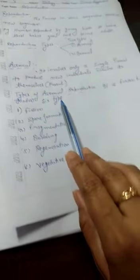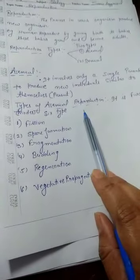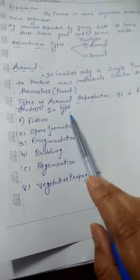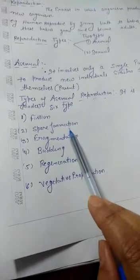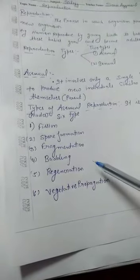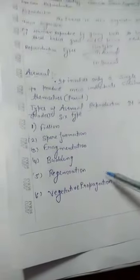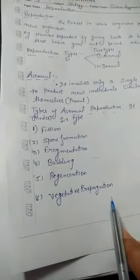Now, the types of asexual reproduction: asexual reproduction is further divided into six types. First is fission, second is spore formation, third is fragmentation, fourth is budding, fifth is regeneration, and sixth is vegetative propagation.